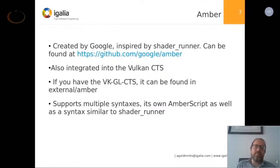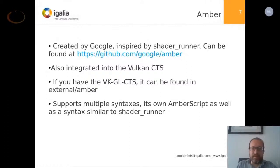For Vulkan scripting, there is Amber, which was created by Google and was explicitly meant to be a Shader Runner-like thing but for Vulkan. It has its own GitHub project but is also integrated into the Vulkan CTS — you can find it in the external/amber directory. For its script files, it supports multiple syntaxes: it has its own Amber script syntax, and it also supports basically the same Shader Runner syntax but for Vulkan. There are examples of each included with the Amber source.